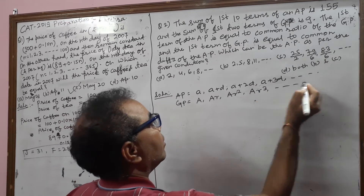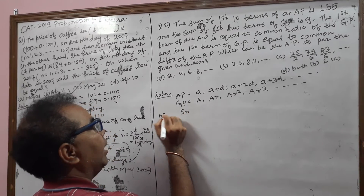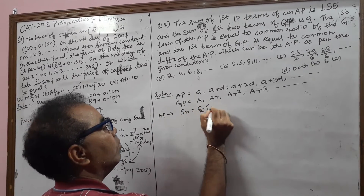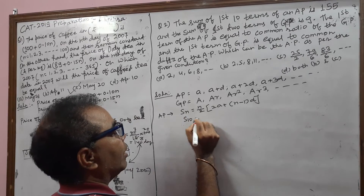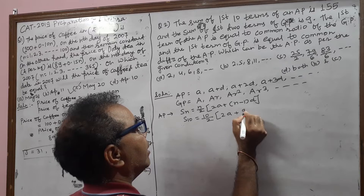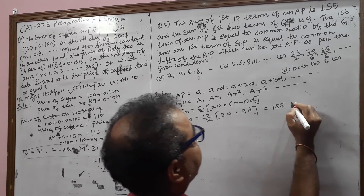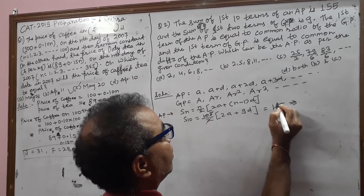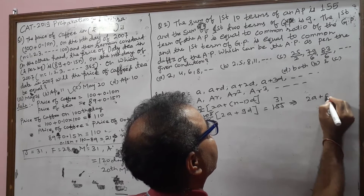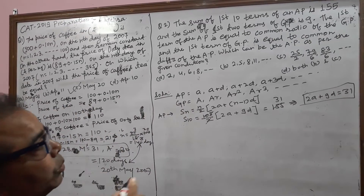In the AP, we write: a, a+d, a+2d, a+3d, and so on. In the GP, we write: A, Ar, Ar², Ar³, and so on. For the AP, S_n = (n/2)(2a + (n−1)d). So S_10 = (10/2)(2a + 9d), which is given as 155. This gives us 5(2a + 9d) = 155, so 2a + 9d = 31.